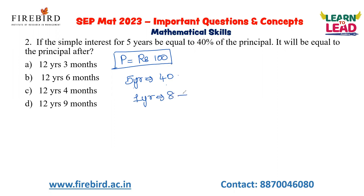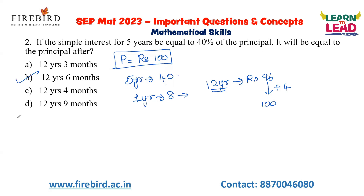The nearest multiple of 8 close to 100 is 96, which is 8 × 12. So at the end of 12 years, the simple interest is 96 rupees. To reach 100, I need 4 more rupees. Since 4 is half of 8, and 8 rupees is paid per year, 4 rupees would be paid in 6 months. So the answer is 12 years and 6 months.